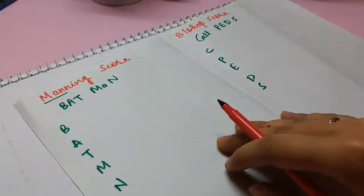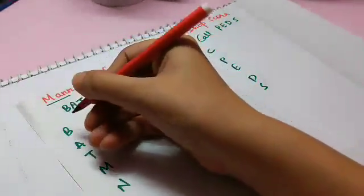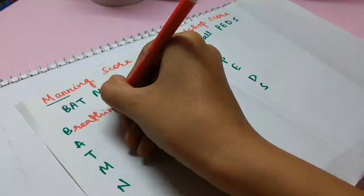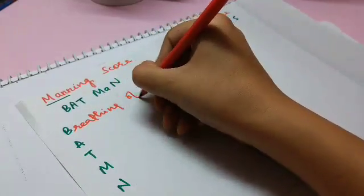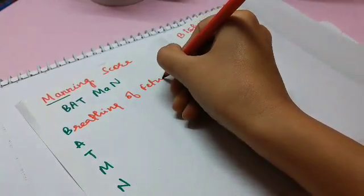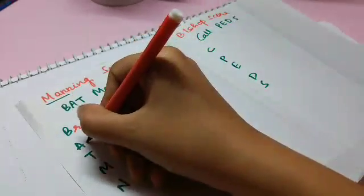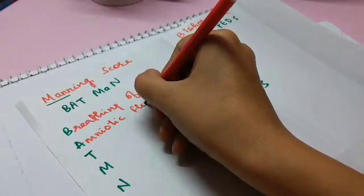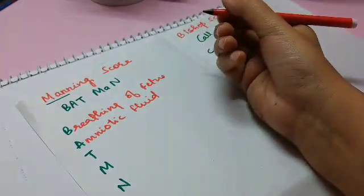The B in the Batman stands for breathing of fetus, while A is for amniotic fluid, the T is for the tone of fetus.